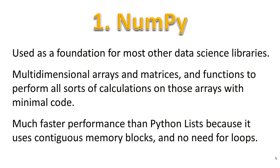Number one is NumPy. NumPy is very widely used in Python. It's used as a foundation for most other data science libraries. It supports multi-dimensional arrays and matrices — think of a big Excel spreadsheet with multiple tabs. It supports functions to perform all the different calculations you might want to do on a specific column, row, or the whole sheet at once with minimal code, so you don't even have to program for loops. And it has much faster performance than Python lists because it uses contiguous blocks of memory.